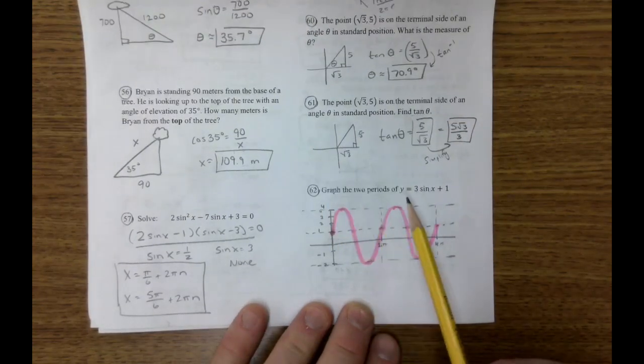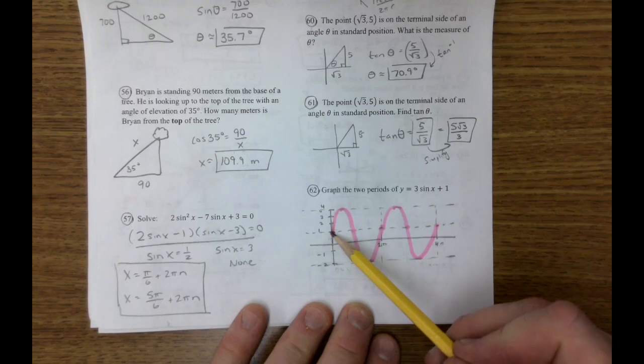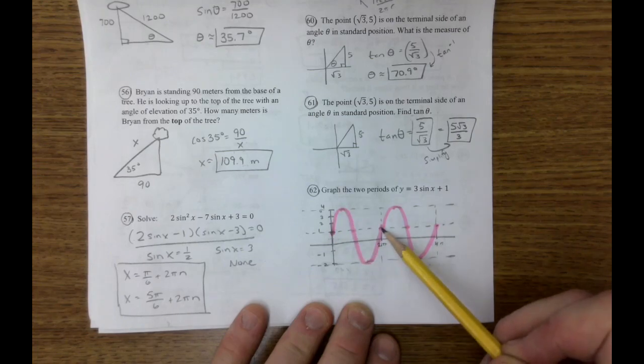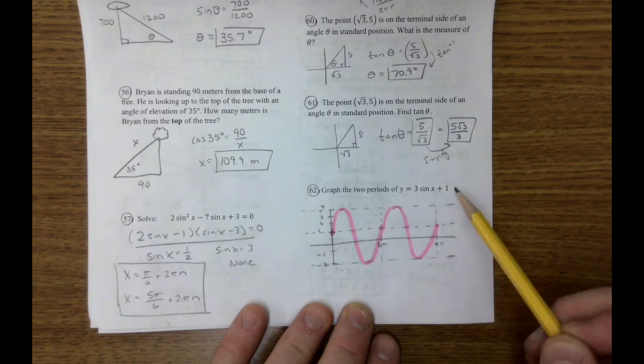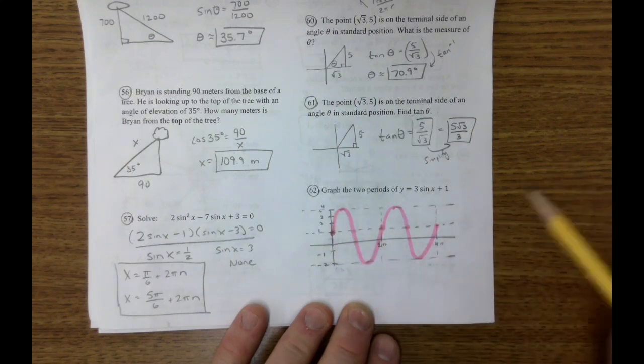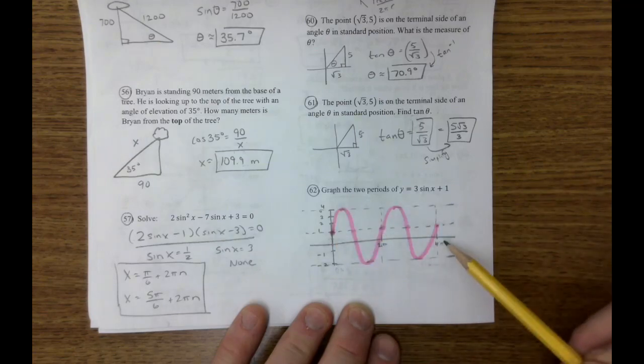On number 62, graph two periods of sine. Remember, sine starts at the middle. Mid, max, mid, min, mid. And it has a midline of one, and it goes up three and down three from there. Two periods to four pi.